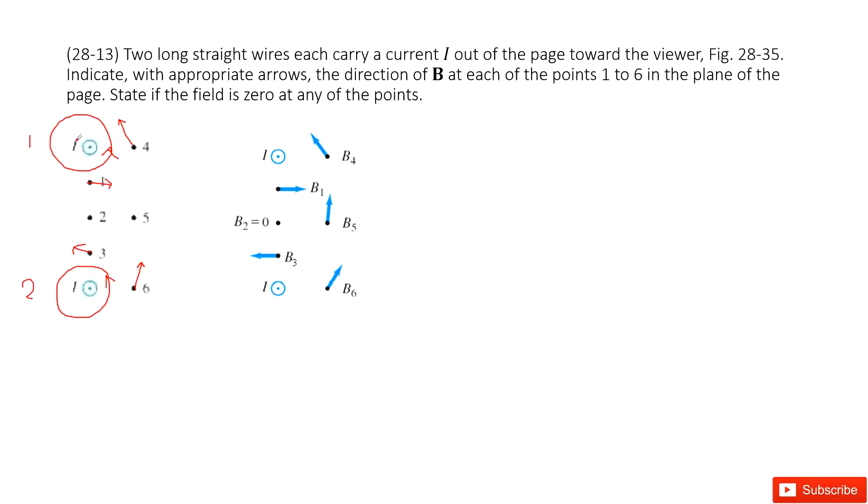Now we look at point 2. Point 2 is the midpoint between the two wires. The magnetic fields from the two wires are in opposite directions, so they cancel. Thus B₂ equals 0. For B₅, it is directed upward. Thank you.